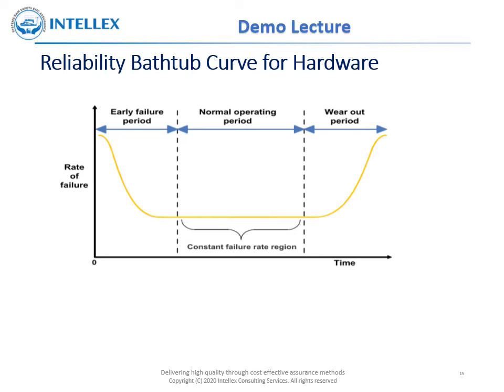What you see on the screen is the famous bathtub curve for reliability, which is frequently referred to while dealing with reliability. The first period is the early failure period, during which a high failure rate is encountered due to manufacturing defects. This period typically lasts a couple of months, and this issue can be tackled by the burn-in process.